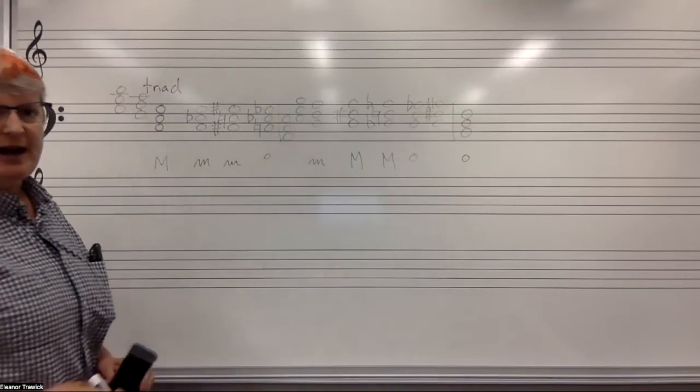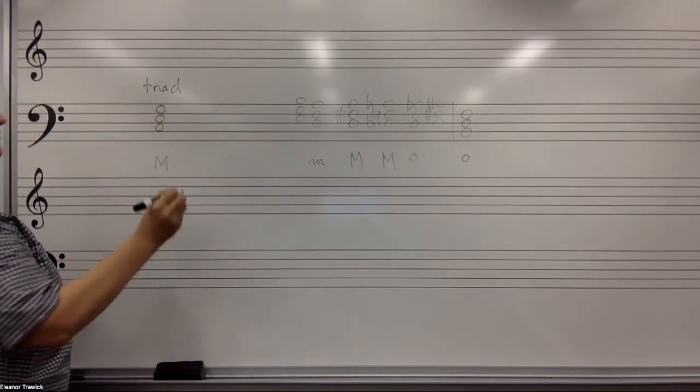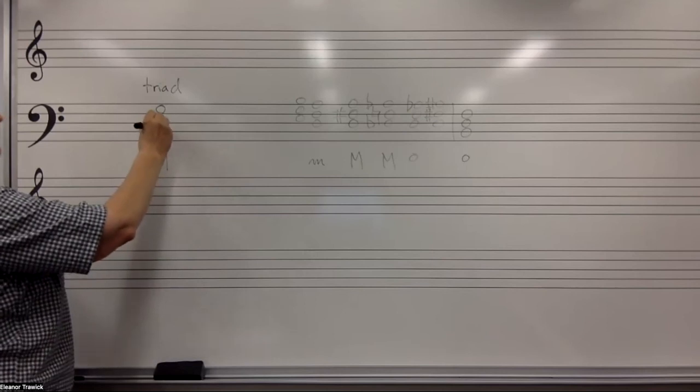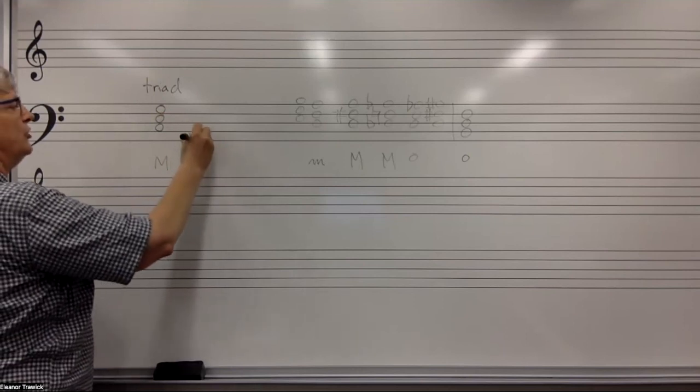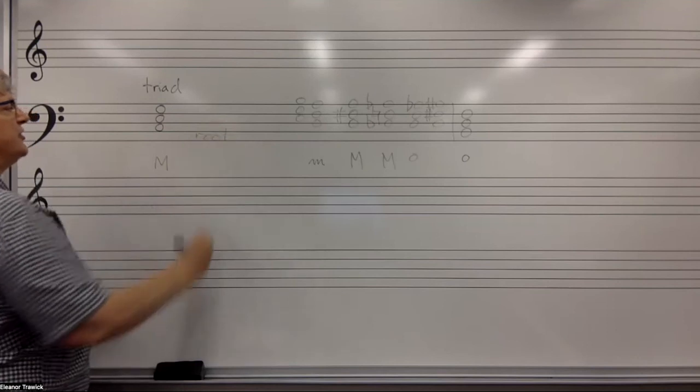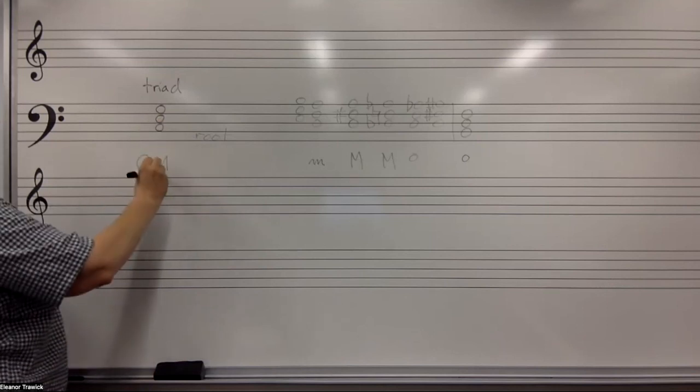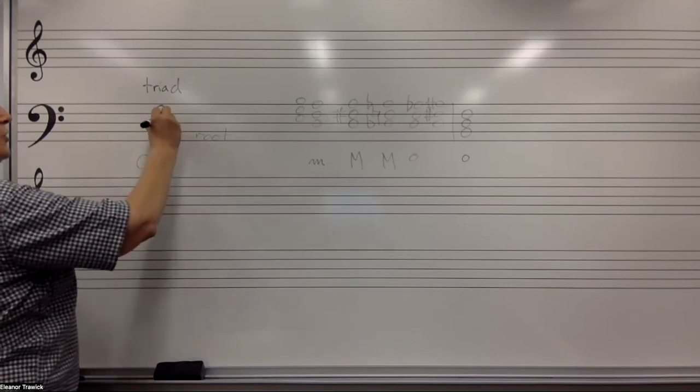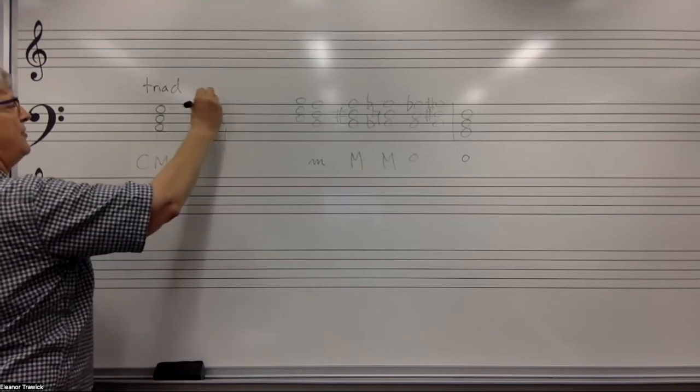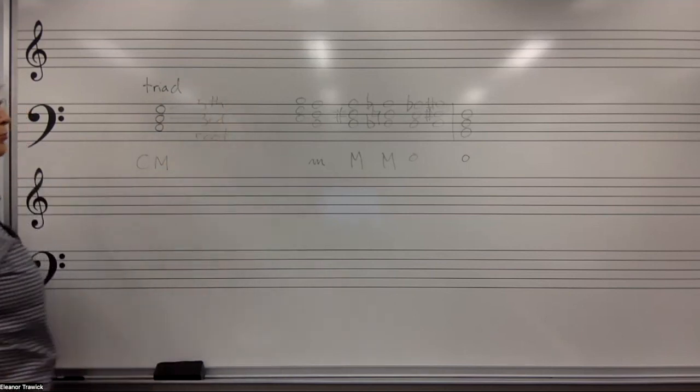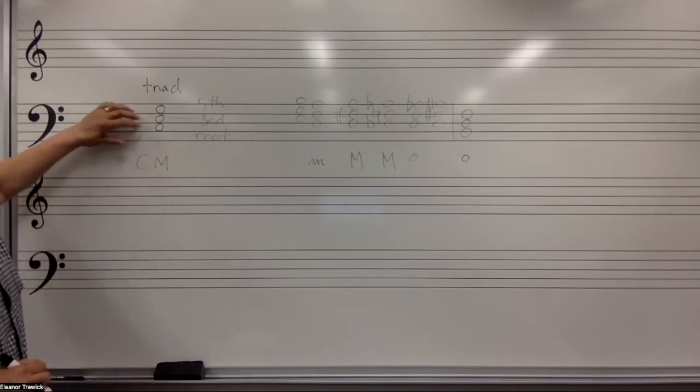I realize now that I'm using terms that I haven't defined for you. So let me go back and do that. The three notes of a triad have specific names. When a triad is stacked up so that it's a stack of thirds, the lowest note in the stack is referred to as the root. And that's the note that gives the triad its name. So this is a C major triad because the root is C and the quality of the chord is major. The note a third above the root is called the third. That's pretty easy. And the note a fifth above the root is called the fifth. Also pretty easy. So when we talk about the root, the third, and the fifth of a triad, that's what we mean.